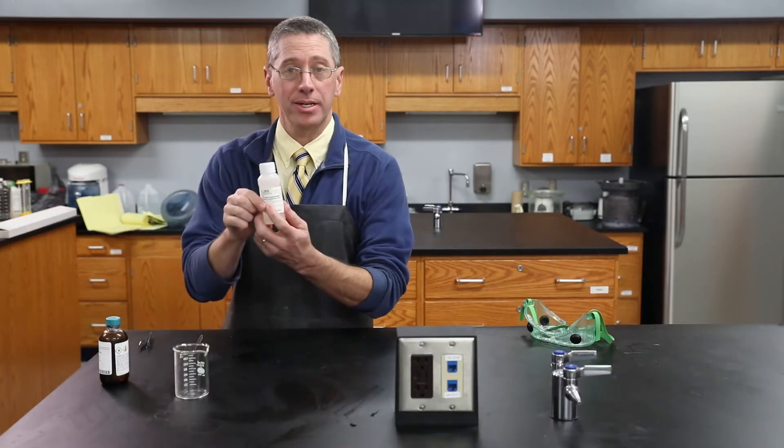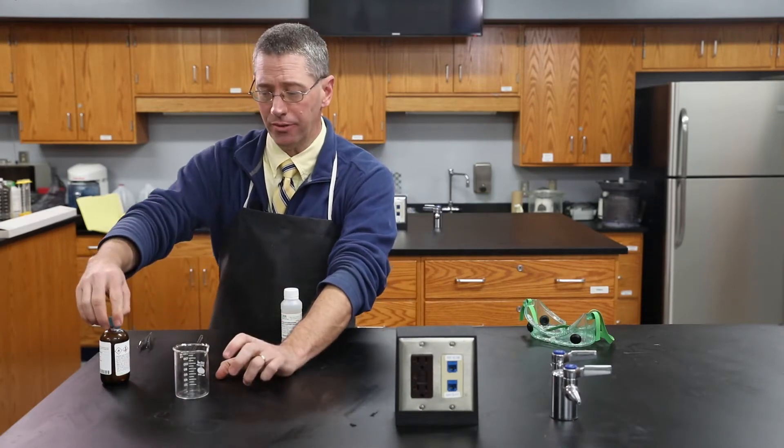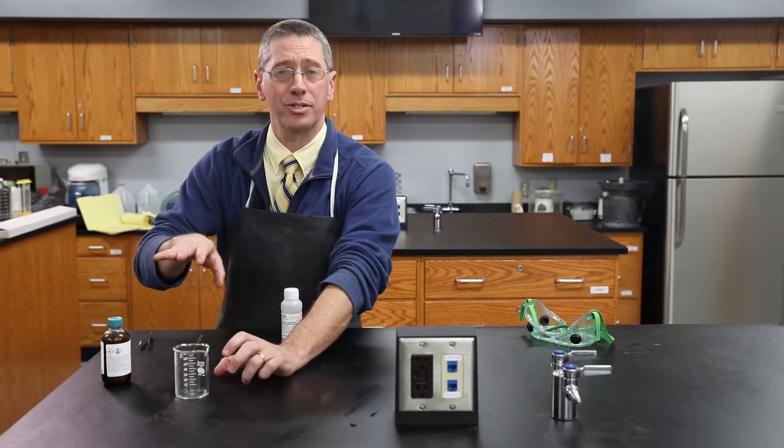I'll pour the first hexamethylenediamine into the beaker, then I'll tilt the beaker so that I can carefully pour the sebacoil chloride on top of it.